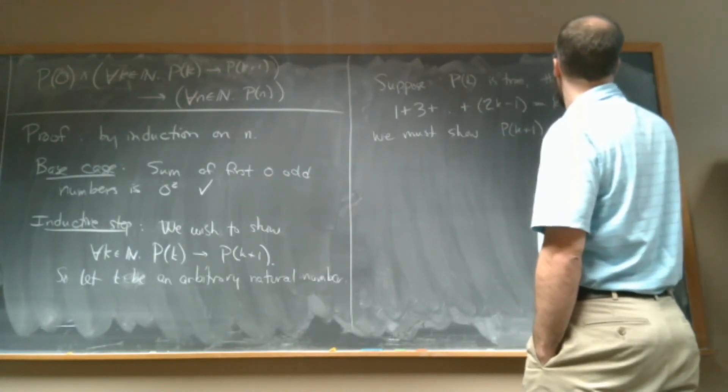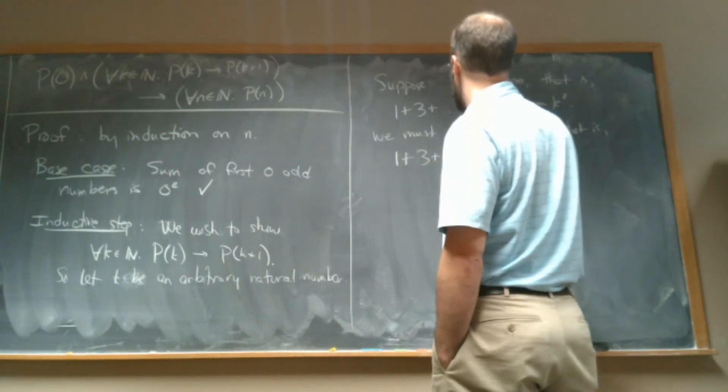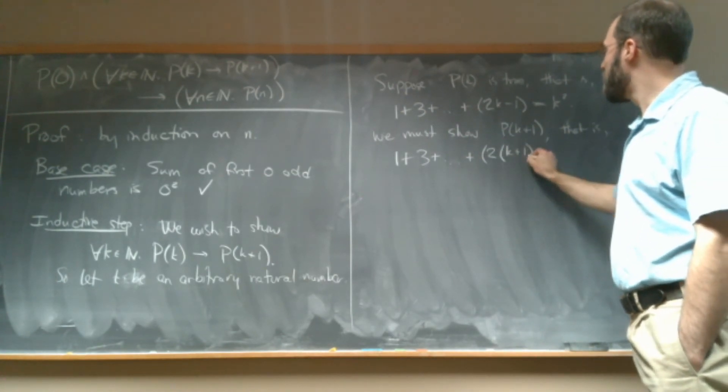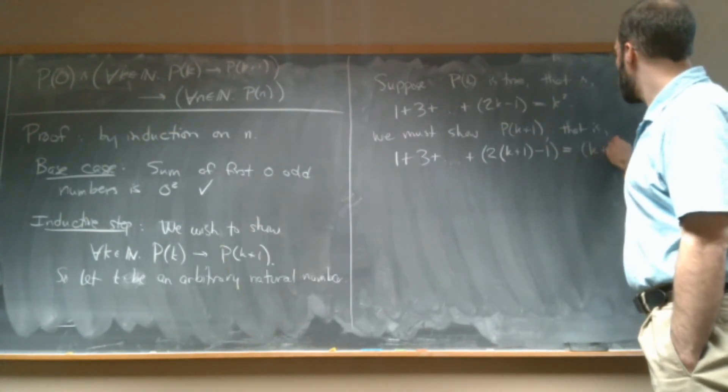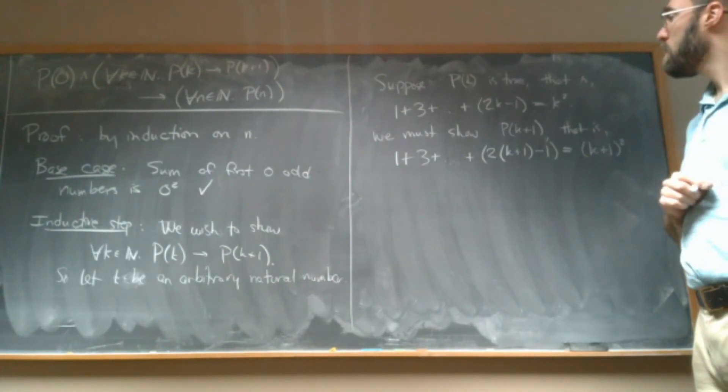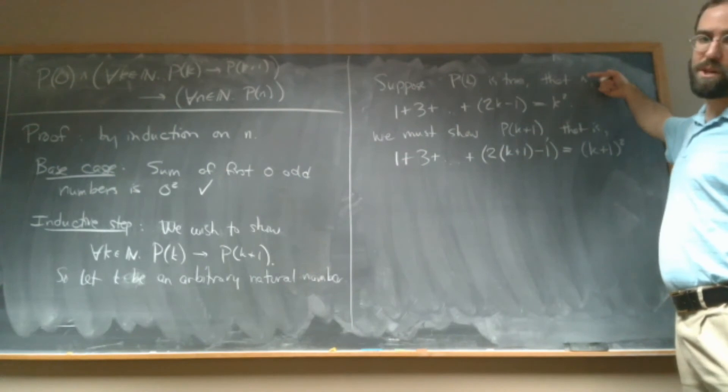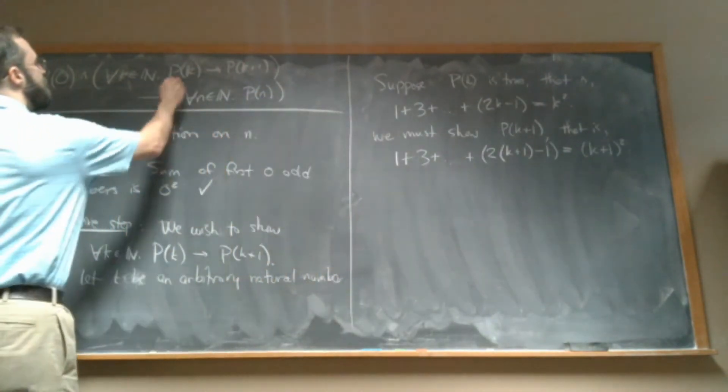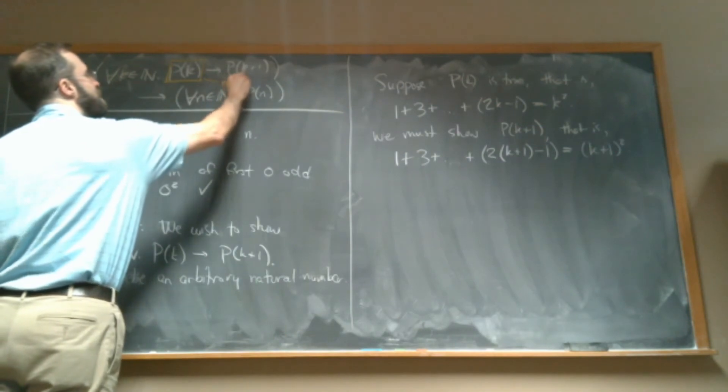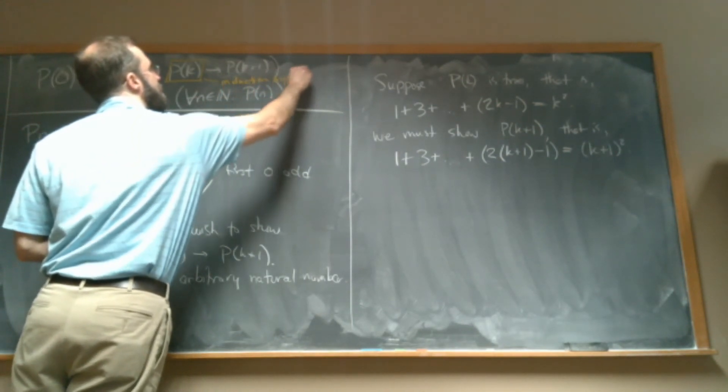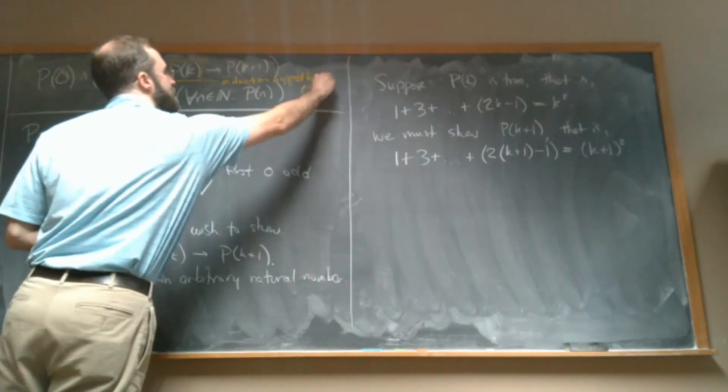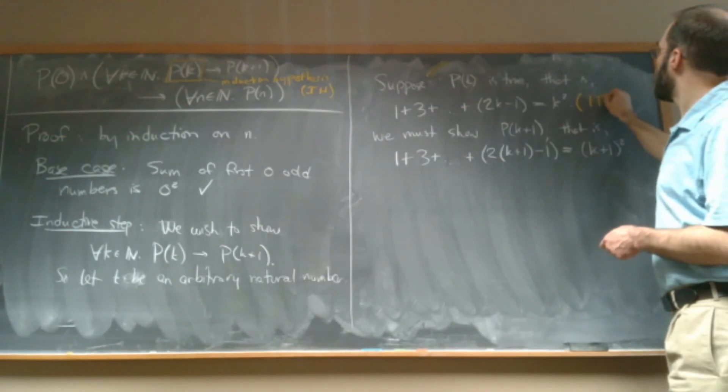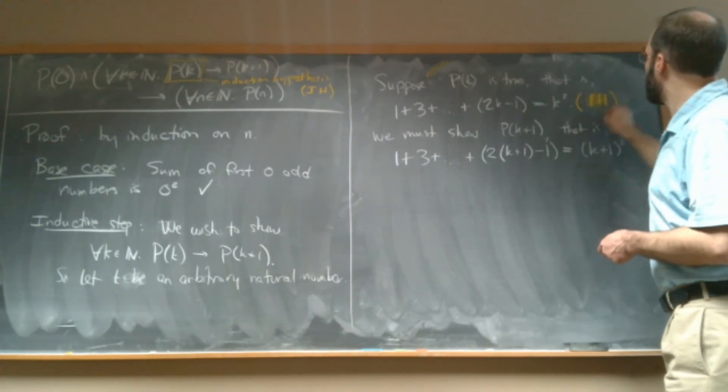that is 1 plus 3 plus dot dot dot plus 2(k+1) minus 1 equals (k+1) squared. By the way, this assumption here, this is called the induction hypothesis. So I can write that up here. This is our induction hypothesis. We often abbreviate that as IH. So this is our IH, our induction hypothesis.